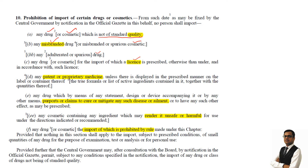Any patent or proprietary medicine unless there is displayed in the prescribed manner on the label of the container thereof the true formula or the list of active ingredients contained in it together with the quantities. It should have the true formula or the list of active ingredients along with the quantities, and the label should bear all these things if it is a patent drug or proprietary medicine. Any drug which by means of any statement, design or device accompanying it or by any other means purports or claims to cure or mitigate any such disease or ailment is not allowed to be imported.